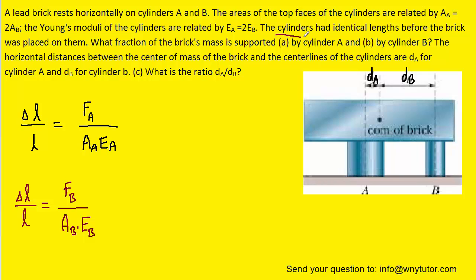The question notes that the cylinders had identical lengths before the brick was placed on them, and that the brick is currently resting horizontally on the cylinders. So the original length L was equal for both cylinders, and the change in length will also be the same for the two cylinders since the brick is resting horizontally.